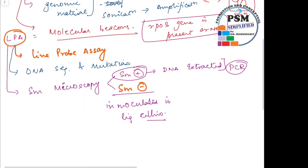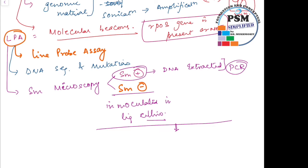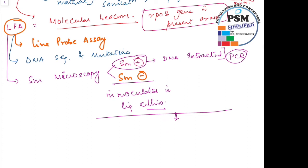So all the material, whatever DNA is extracted from the PCR, this DNA, the PCR amplified products, are reverse hybridized on nitrocellulose strips. So there are something called nitrocellulose strips.